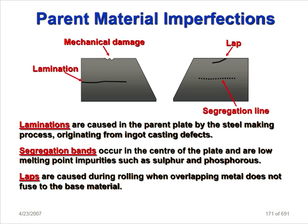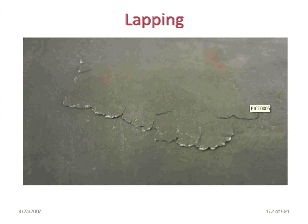Low melting point impurities such as sulfur - if sulfur is present, a segregation band will be created. Laps occur during rolling when overlapping metal does not fuse to the base metal. For example, if a 20 mm plate is made from two 10 mm plates that are not correctly overlapping, a lap imperfection will be created inside - that is called a lap.